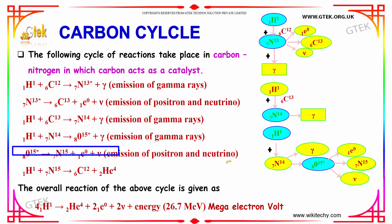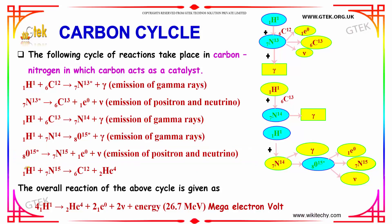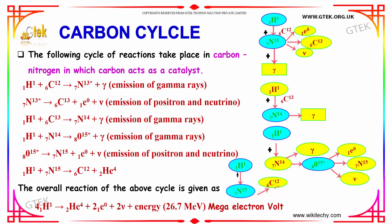Now, nitrogen-15 will merge with a proton to finally form carbon-12 again, and helium is emitted. So hydrogen merges with nitrogen to form carbon-12 once again, and helium.